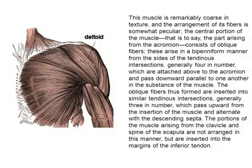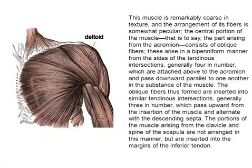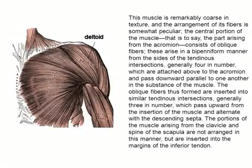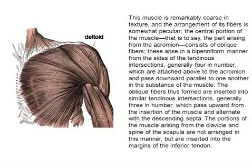This muscle is remarkably coarse in texture and the arrangement of its fibers is somewhat peculiar. The central portion of the muscle — that is, the part arising from the acromion — consists of oblique fibers. These arise in a bipenniform manner from the sides of tendinous intersections, generally 4 in number, which are attached above to the acromion.